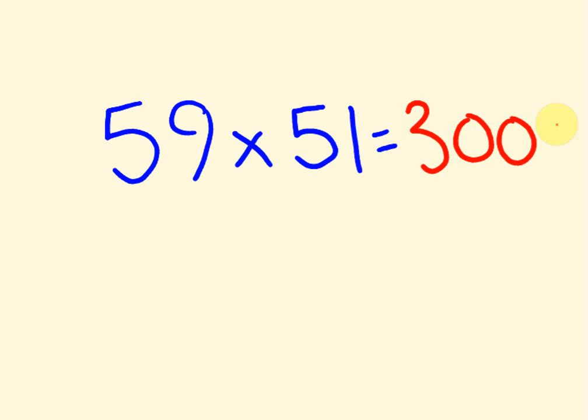What about this one here? I'll get you to work out, see how fast you can work out 59 times 51. Look, I reckon you should actually be able to work that out instantly. The answer to that is 3009.